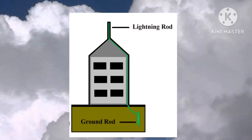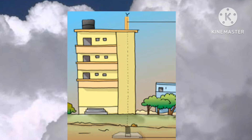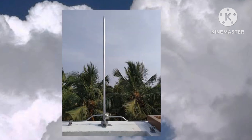To prevent damage to tall buildings by lightning strikes, they are provided with lightning conductors. A lightning conductor consists of a thick copper strip with a spiked end. The strip is attached to the outer wall of the building with the spikes raised above the highest point of the building. The lower end is connected to a copper plate buried in earth. The spikes accept any discharge from the cloud and conduct it harmlessly to earth, so no damage occurs to the building.